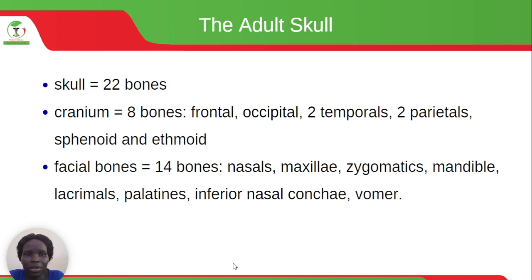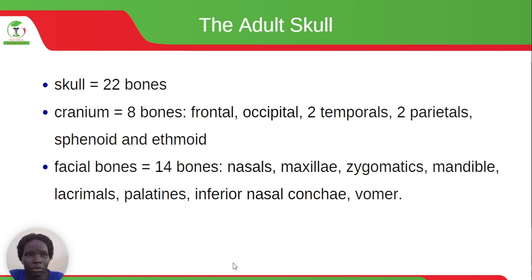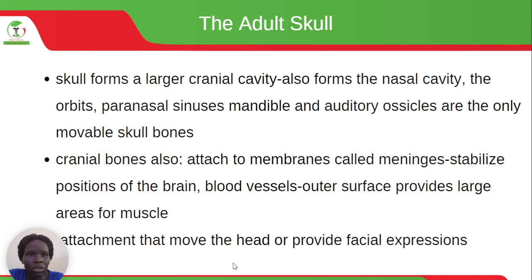Then we have the facial bones, which are 14 in number. These are the nasals, the maxillae, zygomatics, mandible, lacrimals, palatines, inferior nasal conchae, and the vomer. The skull also forms a larger cranial cavity, the nasal cavity, the orbits, and paranasal sinuses.